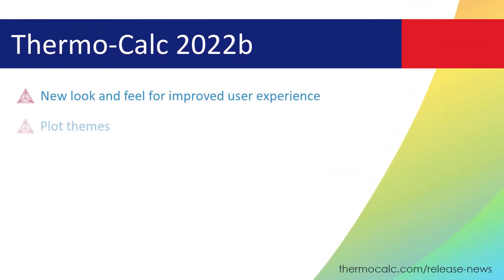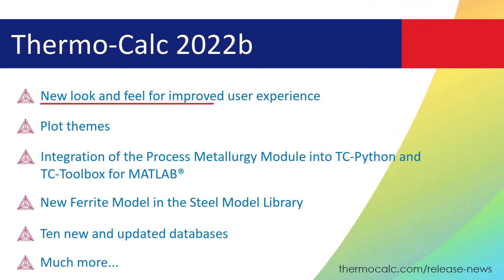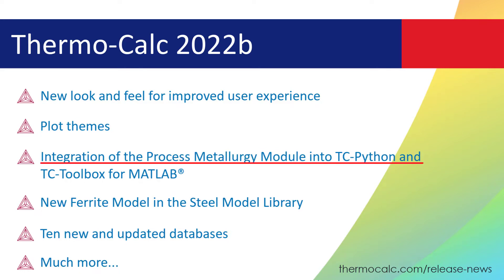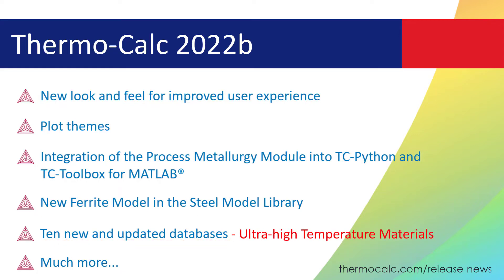Introducing Thermo-Calc 2022b, which includes a new look and feel for an improved user experience, plot themes for easy export of consistent images, the integration of the Process Metallurgy module into TC-Python and TC-Toolbox for MATLAB, a new ferrite model in the Steel model library, and 10 new and updated databases, including the introduction of our first ever Ultra High Temperature Materials database.